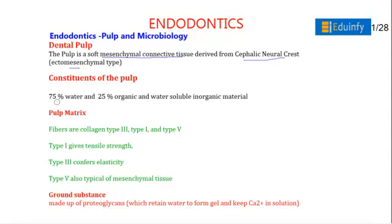The constituents of pulp are 95% water and 25% organic and water-soluble inorganic materials. The pulp matrix usually has fibers — type 1, type 3, and type 5 collagen. Type 1 provides tensile strength, type 3 provides elasticity, and type 5 is a typical mesenchymal tissue. Pulp ground substance is made up of proteoglycans, which retain water to form gel and keep calcium ions in solution.